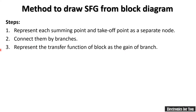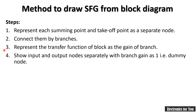Step three — the most important point — is that the transfer function of the block is written as the gain of the branch. The last step is to indicate the input and output nodes separately with branch gain equal to one. Input and output nodes with gain equal to one are called dominors. These are the steps to convert a block diagram to a signal flow graph.